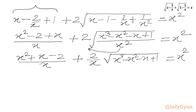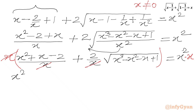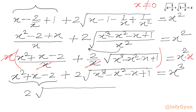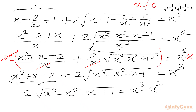Now in the denominator we have x on the LHS, so let us multiply both sides by x so that the denominator x will be cancelled out, since x cannot be 0 and x is only positive. We will get x² + x − 2 + 2 times square root of (x³ − x² − x + 1). On the RHS, x² times x is x³.